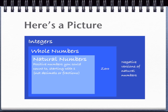Here's a diagram that shows the relationships between natural numbers, whole numbers, and integers. Natural numbers and whole numbers are subsets of integers, which is just another way of saying that all natural numbers and all whole numbers are also integers.